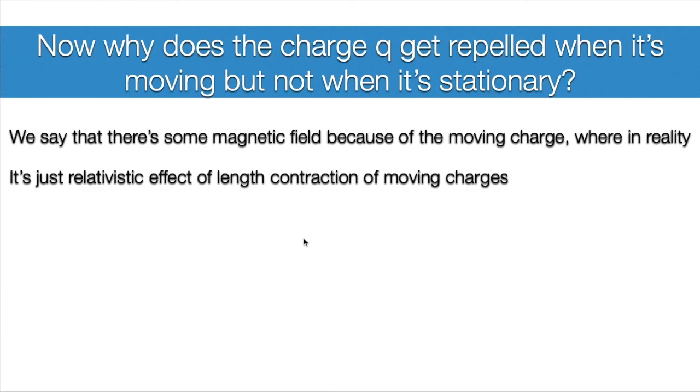Now, we discussed this. Why does the charge Q get repelled when it's moving, but not when it's stationary? It's because of the relativistic effect. The charge, it's relativistic effect of length contraction of moving charge. The positive charges seem more condensed. So there's a net positive charge.